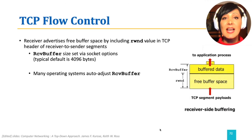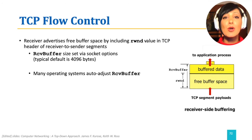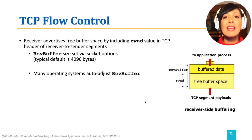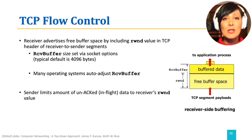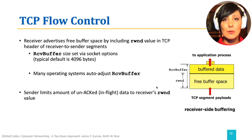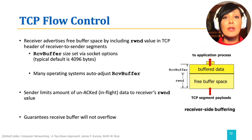Receiver buffer size is a socket option which could be adjusted. The receiver window is a portion of this buffer which is empty and could be used to store newly arriving data. The available space will shrink if the buffer data is consumed slower than the arrival rate. Therefore, the RWND will be smaller. The receiver informing the sender of this new smaller value will cause the sender to limit the amount of in-flight data to the receiver's new value of the receive window. This will guarantee that the receiver buffer will not overflow.